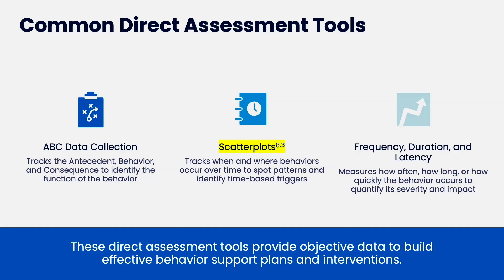Most of the time I try to do frequency, duration, and latency at the same time as my ABC data collection — that's what I do for all my observations. It depends on your supervisor. Sometimes that's really difficult, especially for someone newer to being a behavior analyst. But once you get good, you'll start combining them. Sometimes I'll be doing a scatter plot at the same time. Where behavior techs come in is useful — when I was starting, I'd have the behavior tech observe with me: they could do the frequency while I did the ABC, so we'd have all that data together.